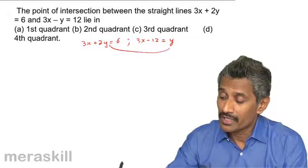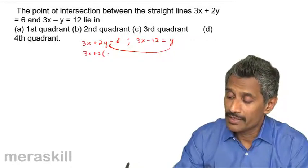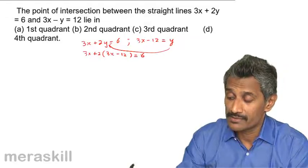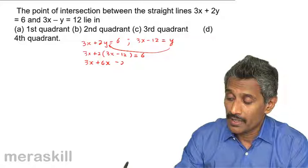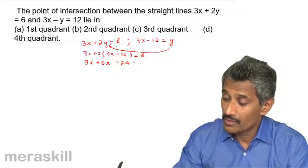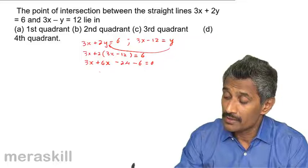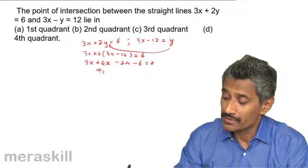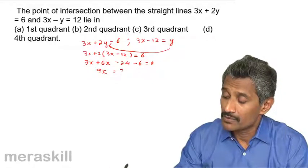So instead of y, you can put this value. So, you get 3x plus 2 will be 3x minus 12 is equal to 6. So, you have 3x plus 6x minus 24 minus 6 is 0, which means 9x. Sorry, we have 6x. So, 3x plus 6x, 9x is equal to 30.